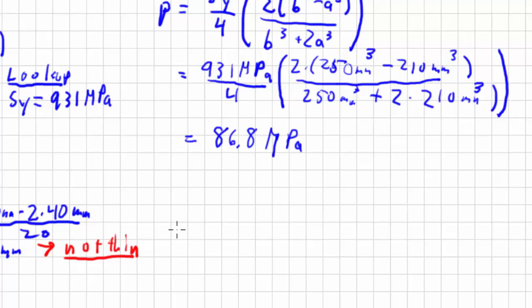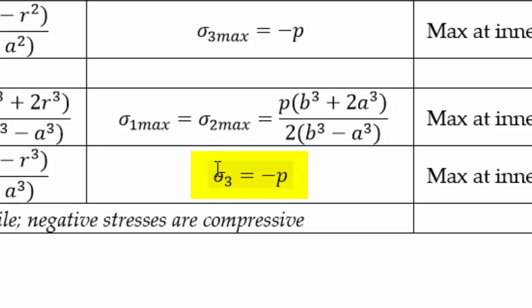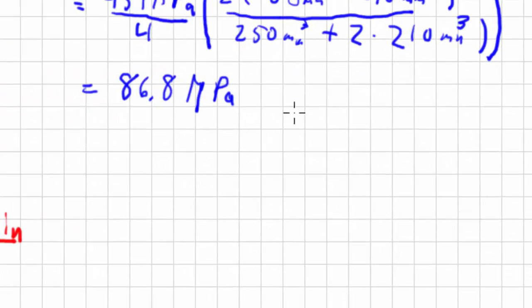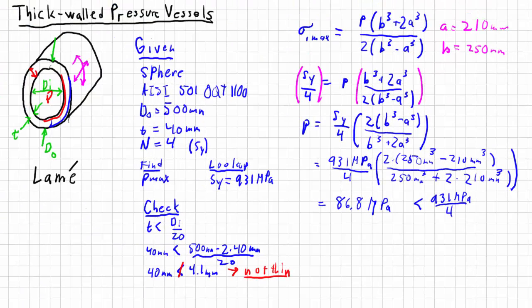This could be our answer. But remember, we have to go back and check to see if our stress is going to be too large. We don't want our stress over that yield stress divided by 4. We found our pressure, and our pressure is going to tell us what the radial stress is. This still has to be less than 931 megapascals over 4. If you do the math, you'll find out that it's true. So this becomes our answer: our pressure should not go over 86.8 megapascals.